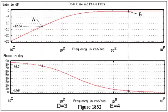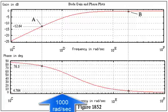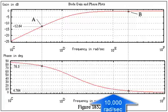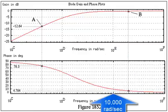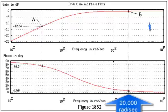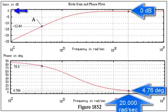Therefore, E equals 4. That's 20,000 radians per second. The gain is 0 dB, and the phase is 4.76 degrees.